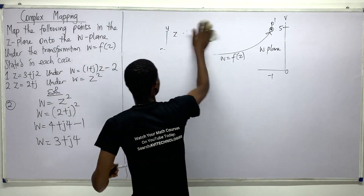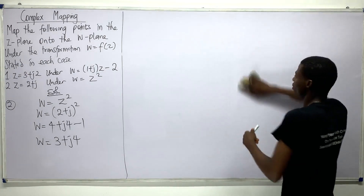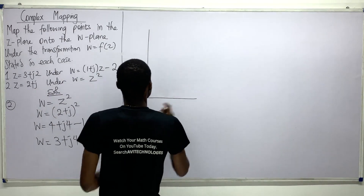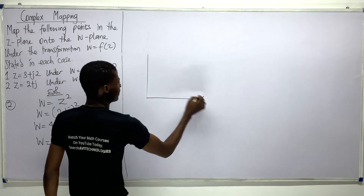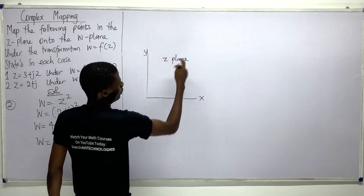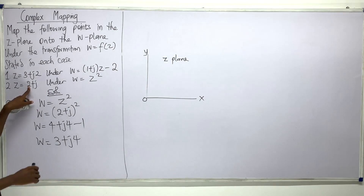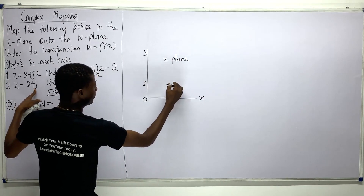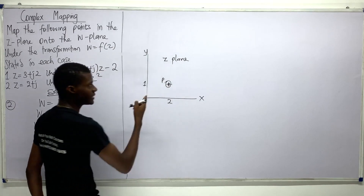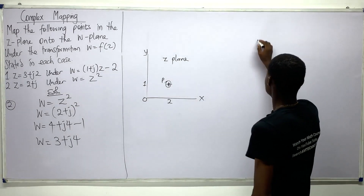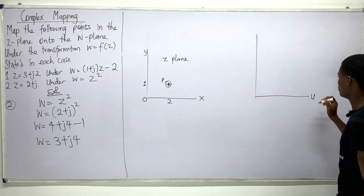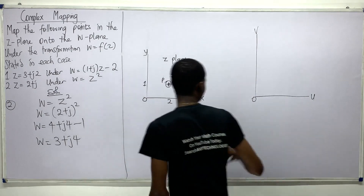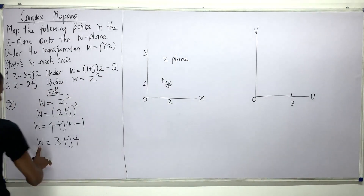Let me show the transformation. Drawing the z-plane: I have my x-axis and y-axis. This is the z-plane with origin 0. My x-value is 2 and my y-value is 1, so I plot the point at (2, 1) and call it P.